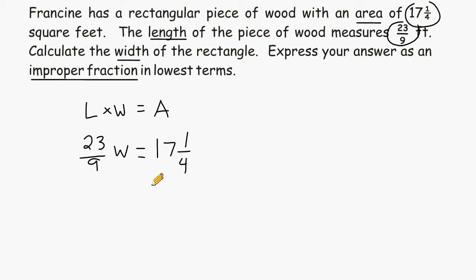Now that we have an algebraic equation set up, all we have to do is isolate our variable to figure out what it's equal to. The first thing that we want to do with this is rewrite the equation in such a manner that this mixed number is an improper fraction. So let's rewrite this as 23 ninths w is equal to 4 times 17 is 68 plus 1 is 69 over 4.